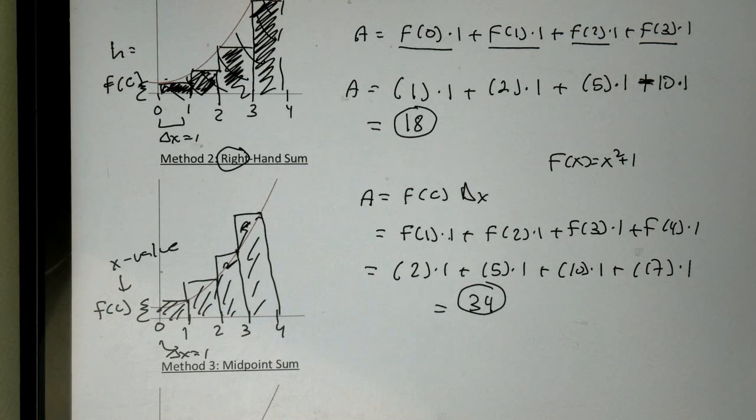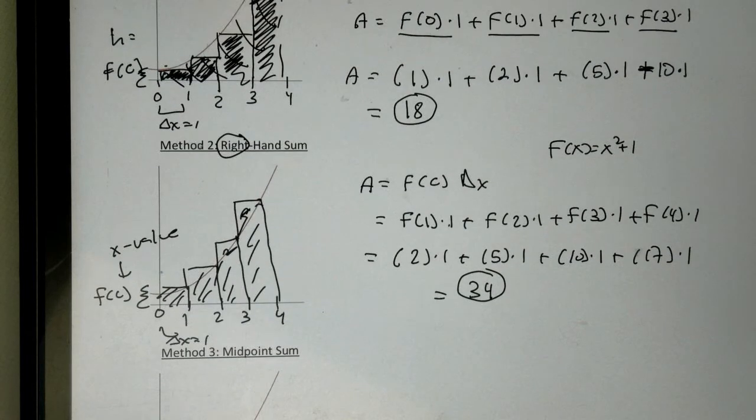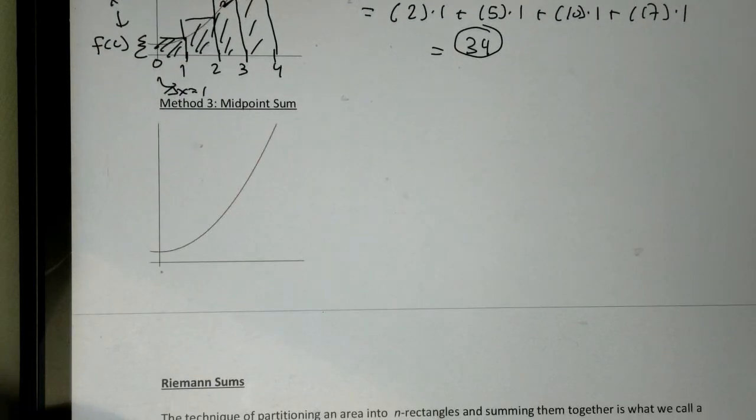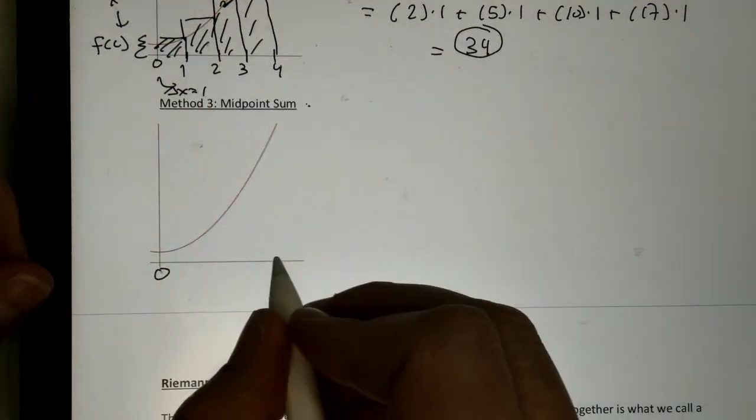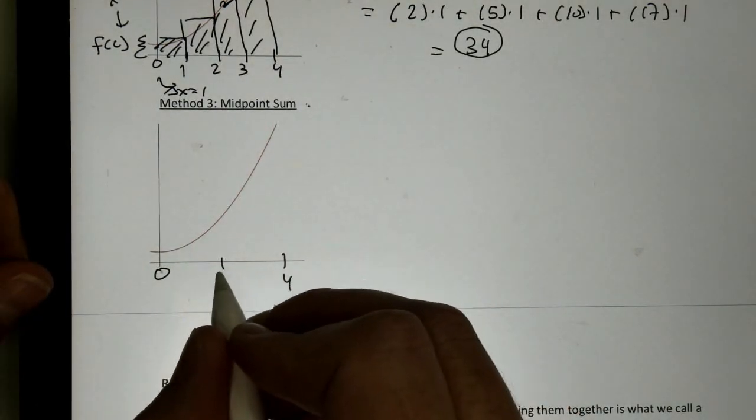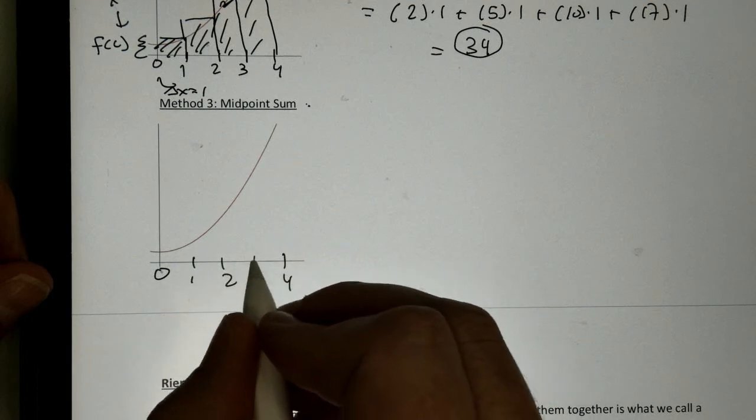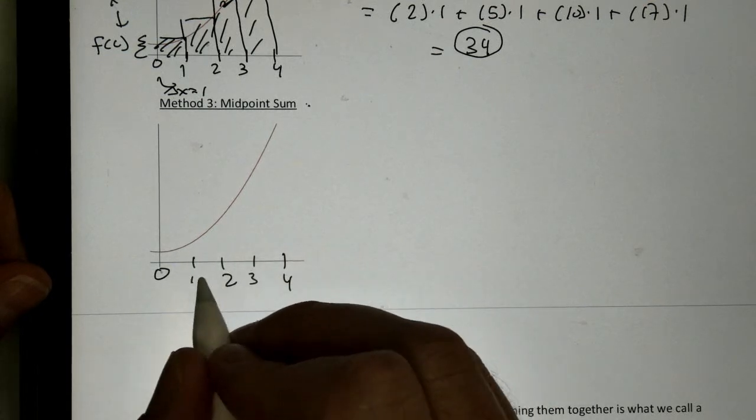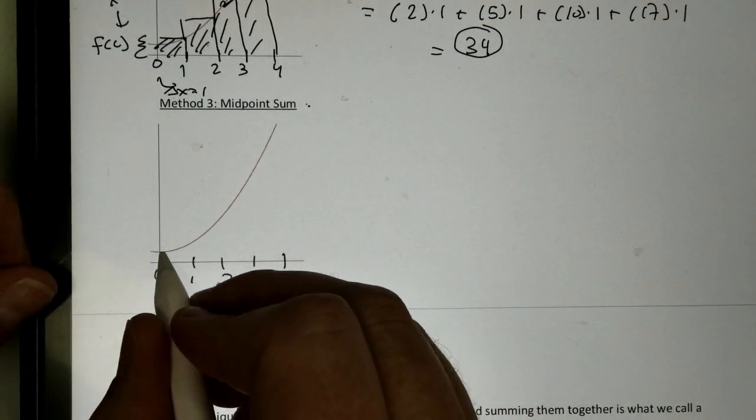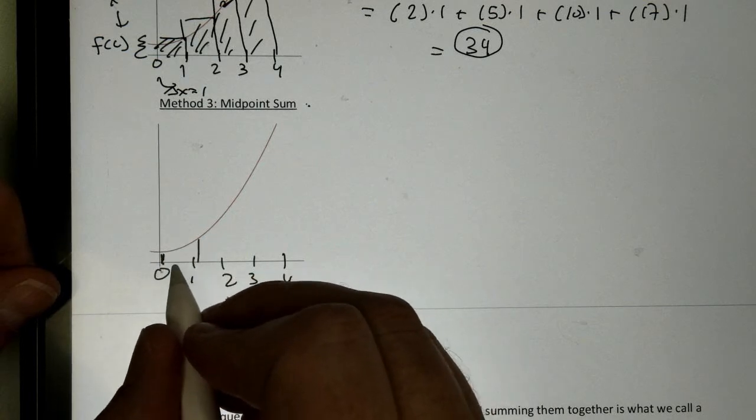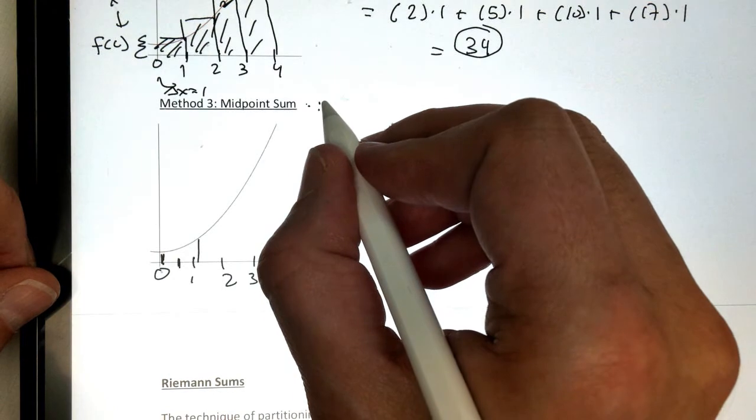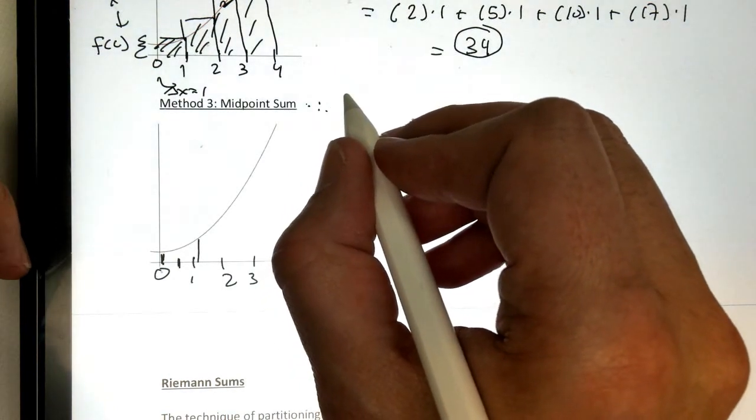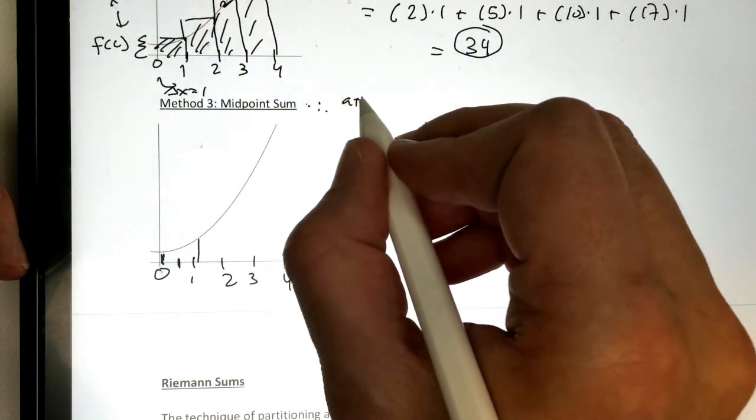But we're still not done because there's one more technique we can look at. And that is what we call the midpoint sum. So, a midpoint Riemann sum is the same thing. But now we're going to, between 0 and 4, we're still going to make delta x is 1. But now, between 0 and 1, I want to pick the middle of it. My midpoint. So, to get the midpoint, we're going to take each domain, take it at a plus b and divide it by 2.